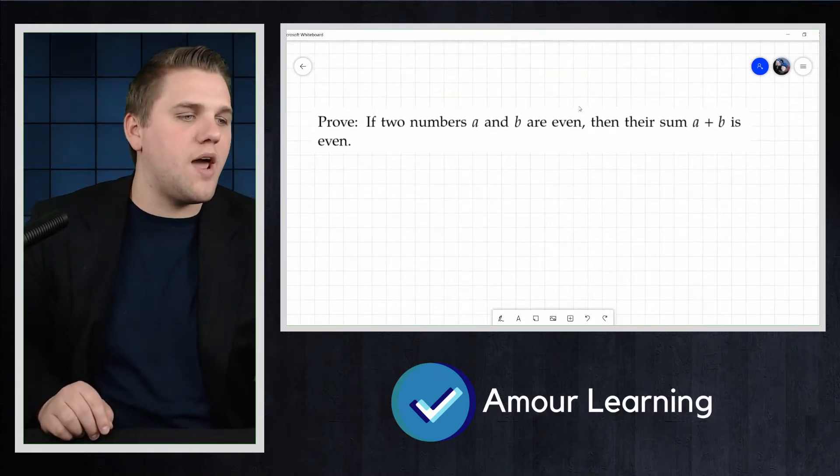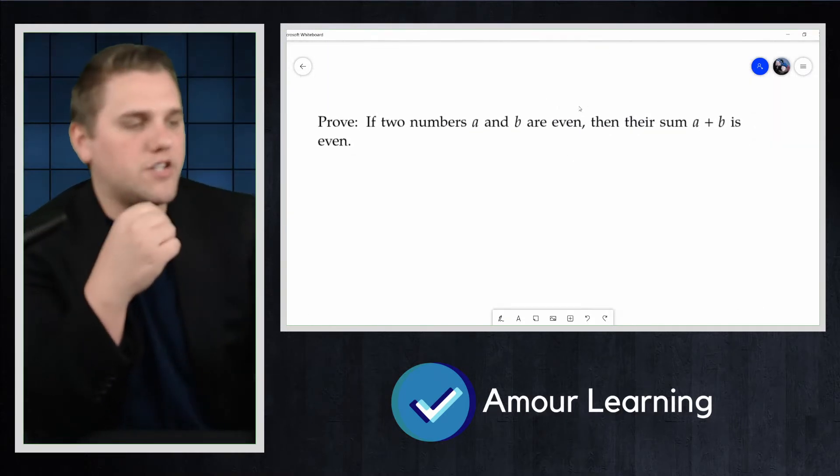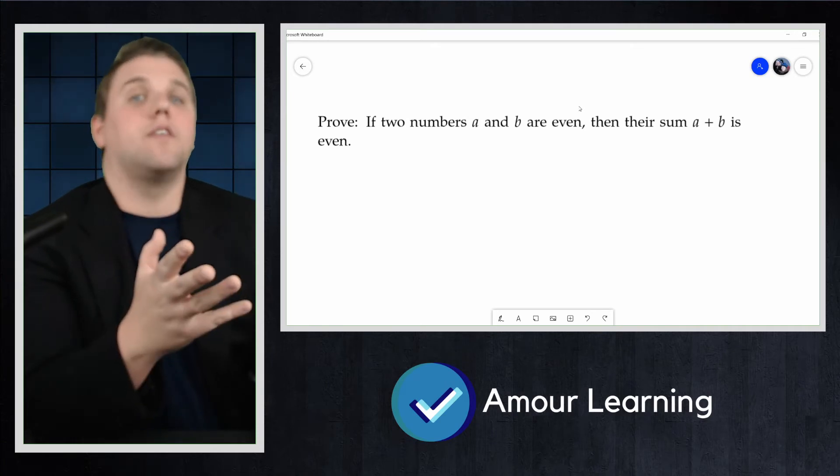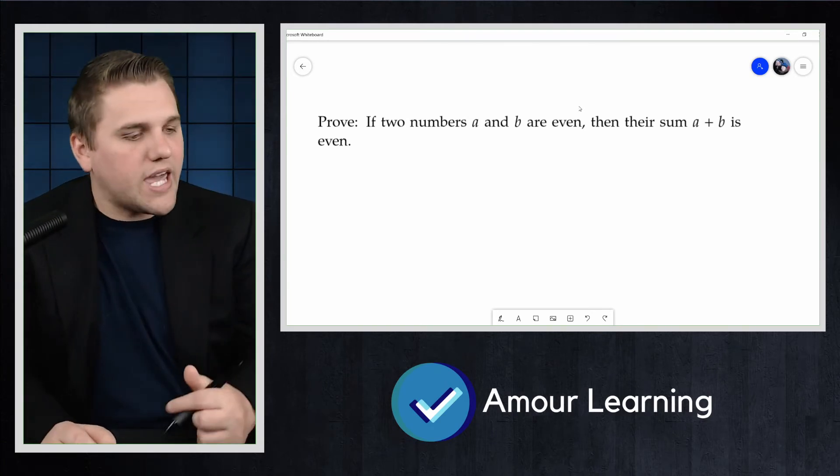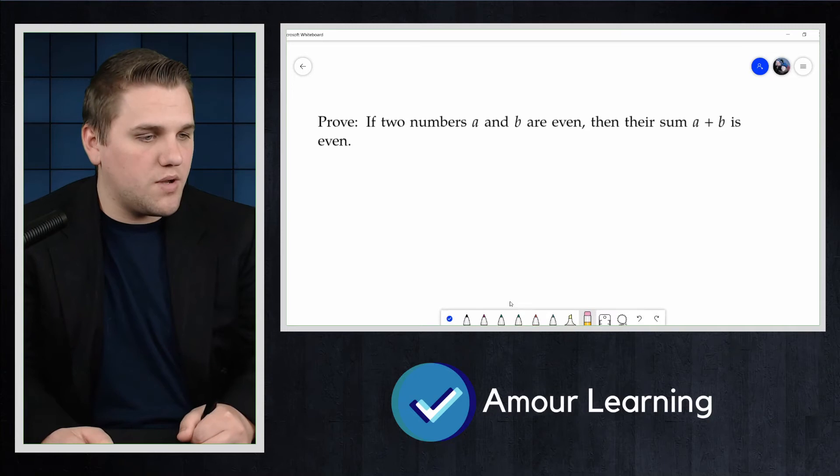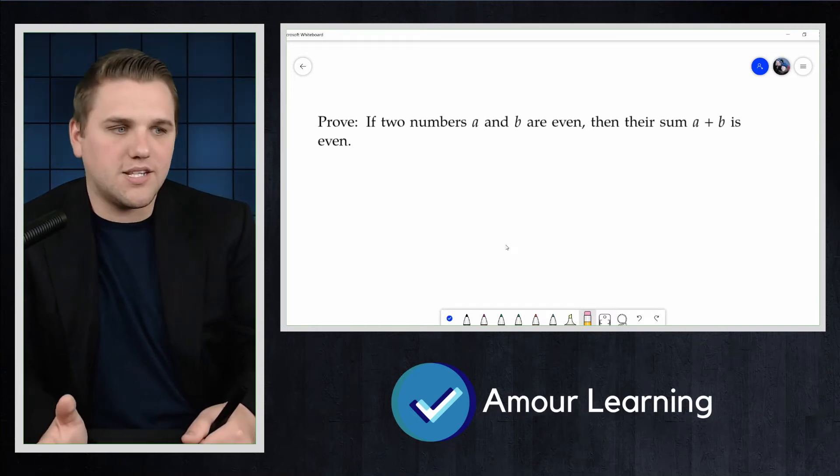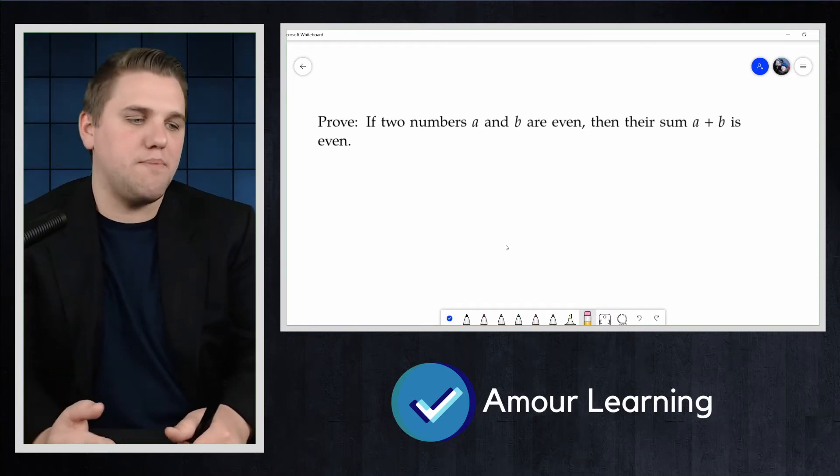Let's prove that if two numbers A and B are even, then their sum A plus B is even. So when we're making this proof, we get to assume the hypothesis that two numbers A and B are even.